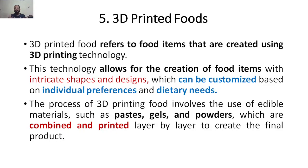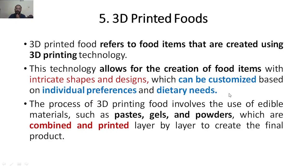It can be customized however you want these particular structures to be designed, and then it is printed based on that design. The process of 3D printing food involves the use of edible materials such as paste, gels, and powders, which are the components of the food — combined and printed layer by layer to create the product.